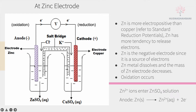Zinc ions enter the zinc sulfate solution. At the anode, the zinc solid dissolves to become zinc ions and two electrons are released.